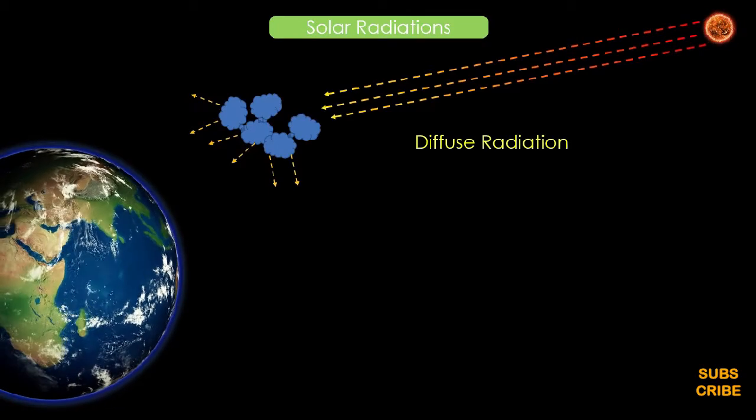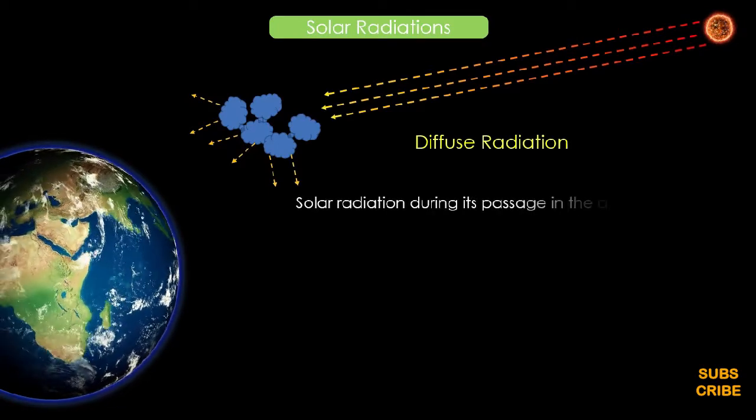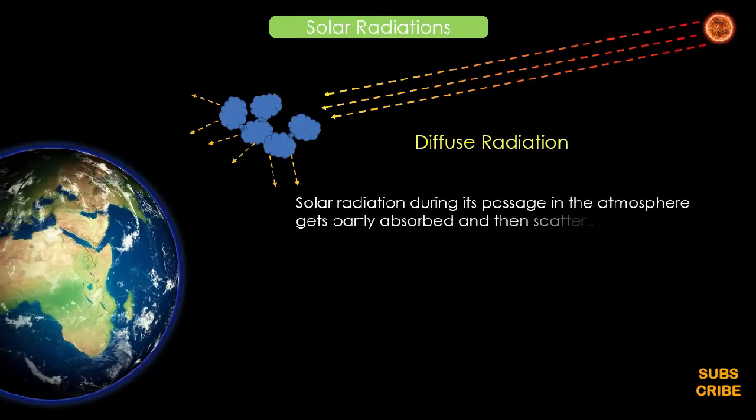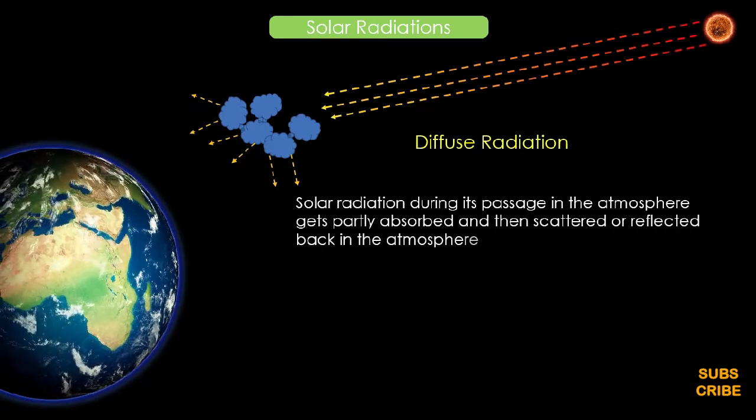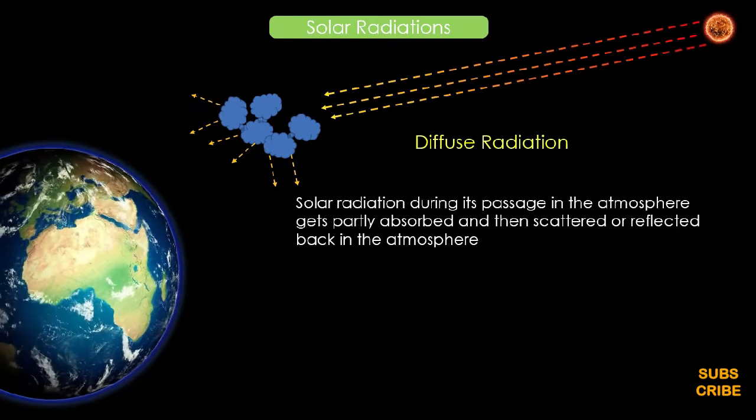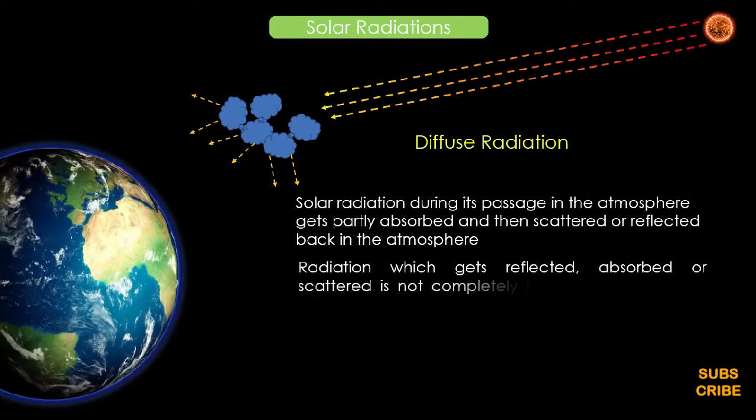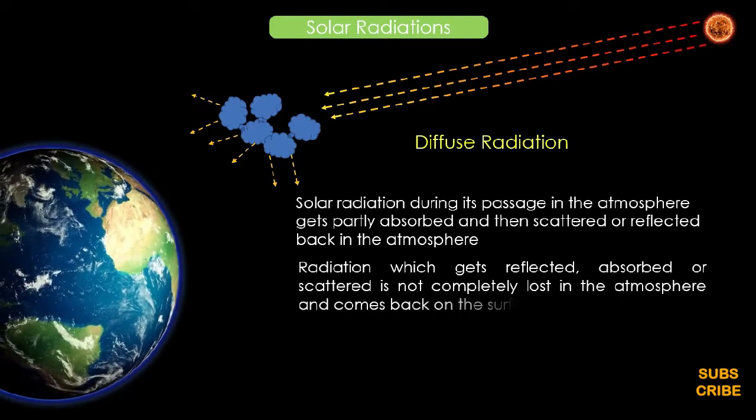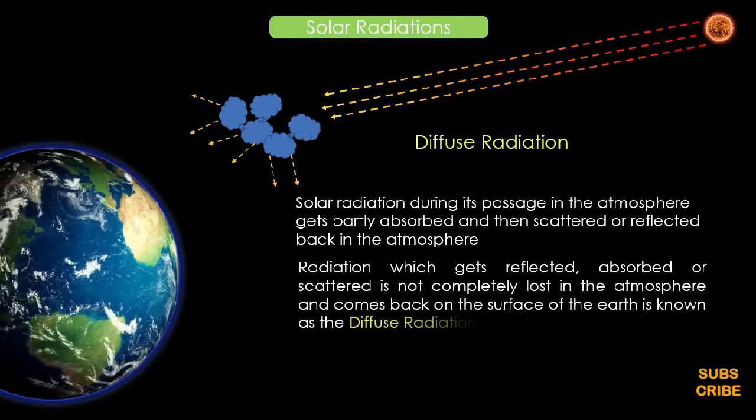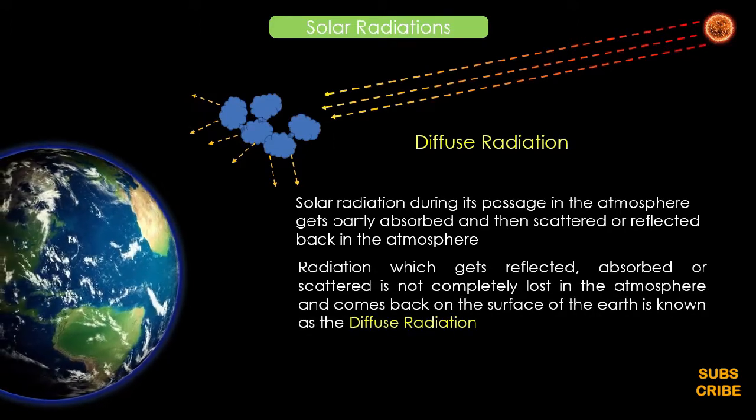Diffused radiation: Solar radiation during its passage in the atmosphere gets partly absorbed in the atmosphere and then scattered or reflected back in the atmosphere. Radiation which gets reflected, absorbed, or scattered is not completely lost in the atmosphere and comes back on the surface of the earth, which is known as the diffuse radiation.